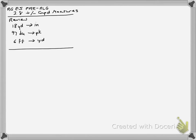The first thing I'd like to do is review our previous units. When we are converting from one unit to another, for instance from yards to inches, you have to recall your conversion property. We know that there are 36 inches in every yard. So with 18 yards, we would multiply 18 by 36 to get our answer.